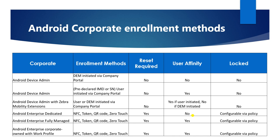For Android corporate enrollment methods, for corporate admin devices the method used is DEM-initiated via the Company Portal. The same features apply: reset required, user affinity, and lock. For corporate admin devices that are pre-declared, enrollment is IT-initiated via the portal. These are the methods available — you can make a note and understand which method your company follows.